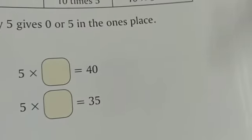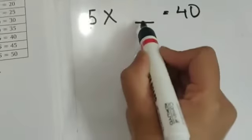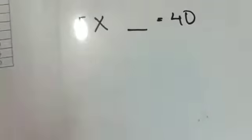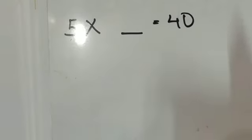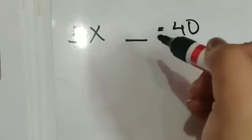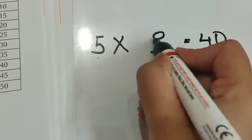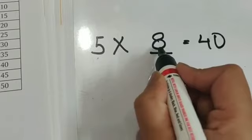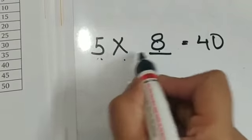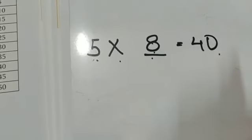So 5 into dash is equals to 40. What will come here? 5 1's are 5, 5 2's are 10, 5 3's are 15, 5 4's are 20, 5 5's are 25, 5 6's are 30, 5 7's are 35, and 5 8's are 40. To complete this equation, 8 is the answer. So 5 into 8 is equals to 40.